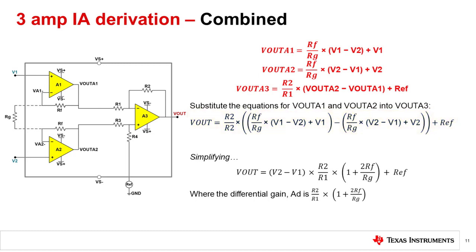After some algebraic simplification, we yield the following total output equation. Vout is equal to V2 minus V1 multiplied by R2 over R1 multiplied by 1 plus 2RF over RG plus reference. Where the differential gain AD is R2 over R1 multiplied by 1 plus 2RF over RG.